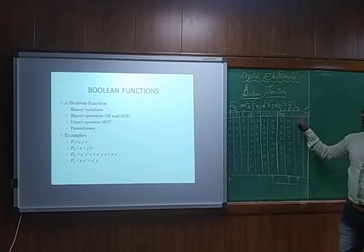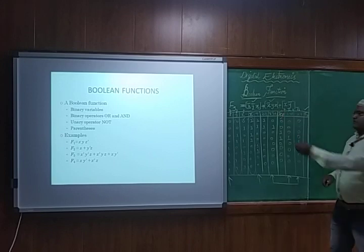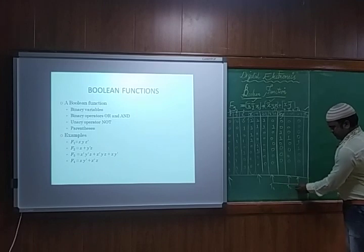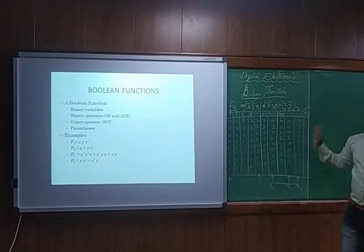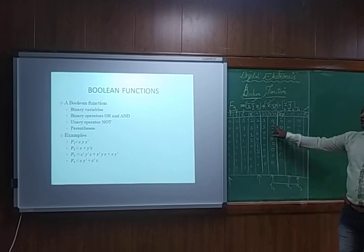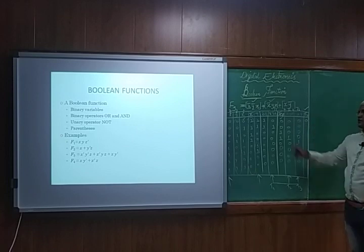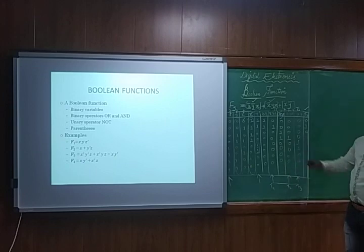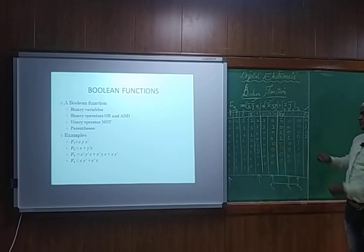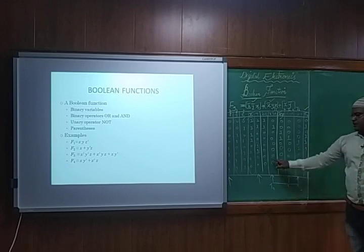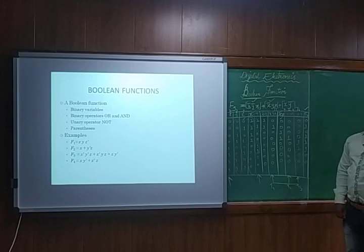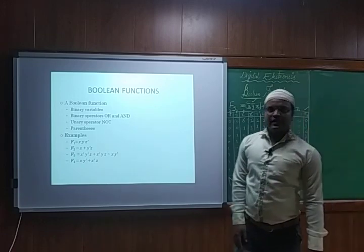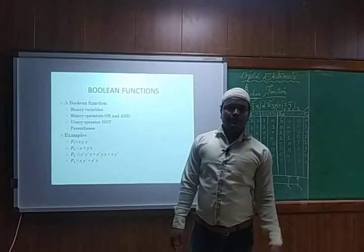After getting term 1, term 2, and term 3, we can write the Boolean function f3 by OR-ing them. So for each row: 0+0+0=0, 1+0+0=1, 0+0+0=0, 0+1+0=1, 0+0+1=1, 0+0+1=1, 0+0+0=0, 0+0+0=0. That is how we found f3 by the truth table method.